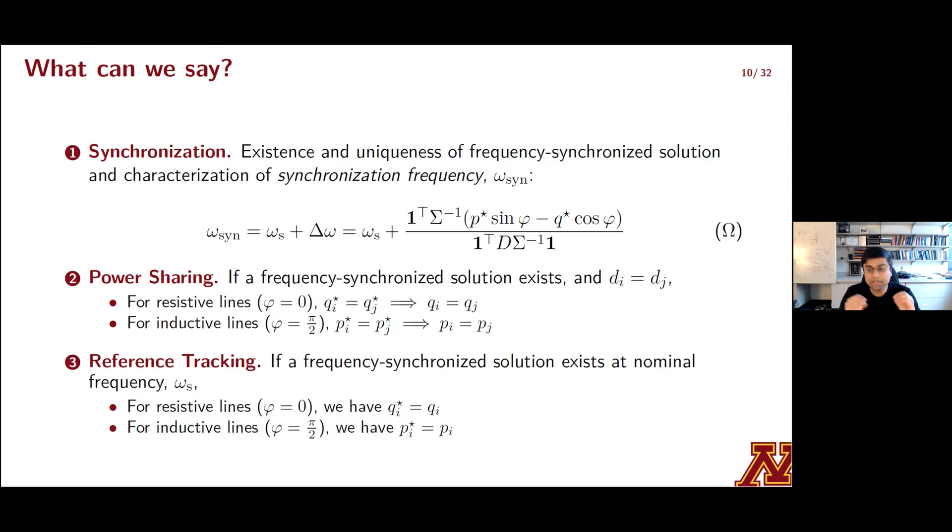If you stare at delta omega, you'll see that it depends on a weighted sum of power set points. These are the terms p star and q star, as well as the transmission line impedance angle, this quantity phi. And then you'll see that if the references sum up in a very particular way to zero, and we term this condition as balanced, there is no frequency offset, and everything is synchronized to the electrical radian synchronous frequency. Let's move on to power sharing. If you have a synchronized solution, and if you make that further effort of tuning the steady state droop characteristics of the different GFM IBRs to coincide, what you get is power sharing.